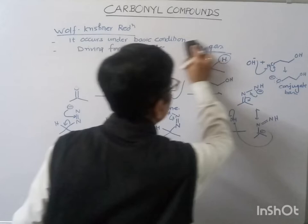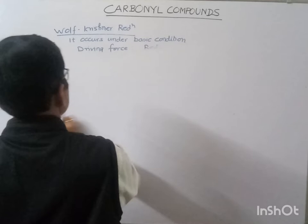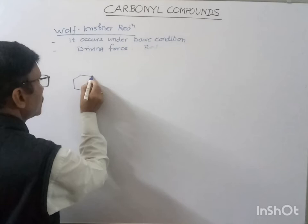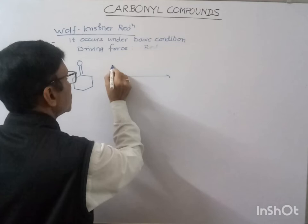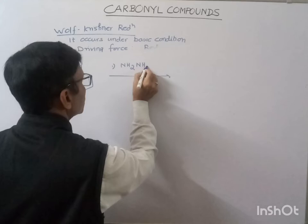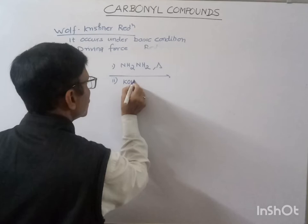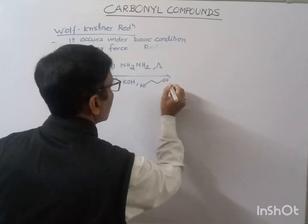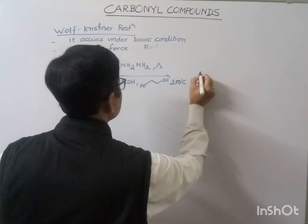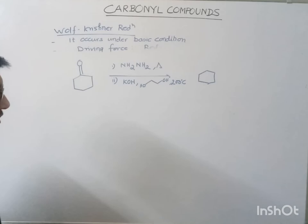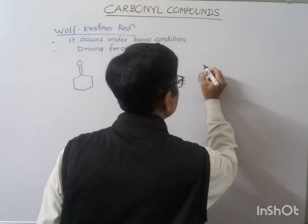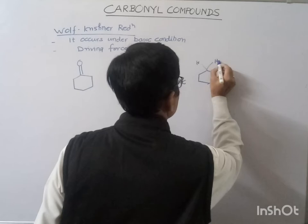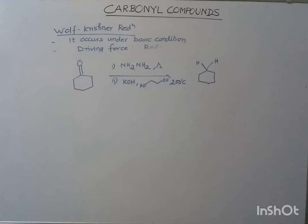Now, suppose if we write an example: we have a cyclic ketone, and if we add the same reagents — hydrazine and KOH in ethylene glycol — and heat at around 200 degrees Celsius, then the cyclic ketone will first be converted into the hydrazone, and from the hydrazone, it will be reduced to the corresponding cycloalkane. This is how reduction of this carbonyl compound takes place.